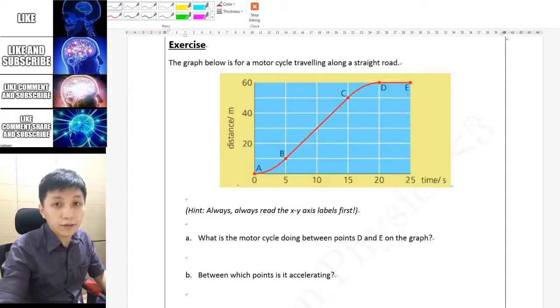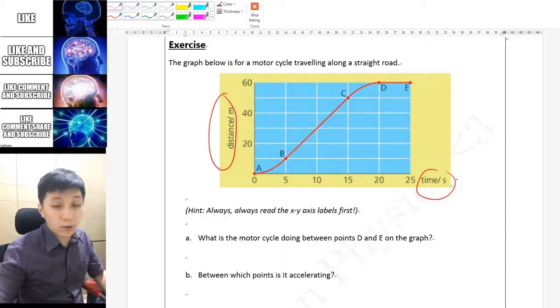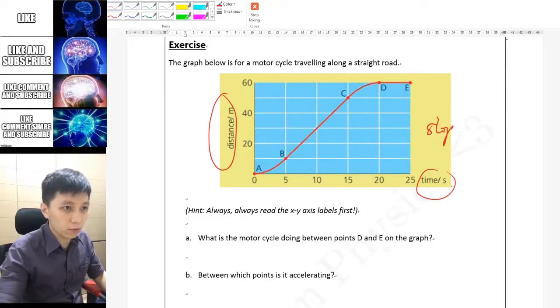Okay, so the first thing that you do whenever you read a graph is to read its x and y axis. This is a distance-time graph, so that means the slope represents speed, because distance over time is speed in physics.